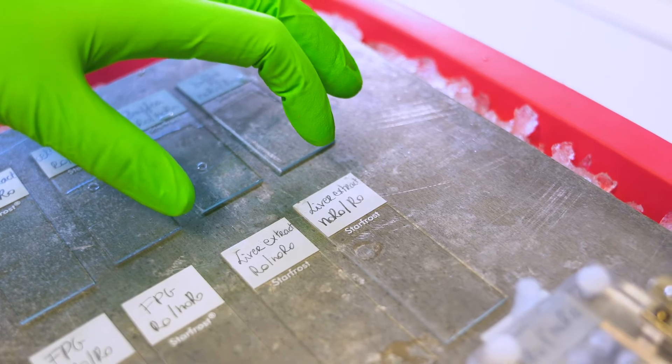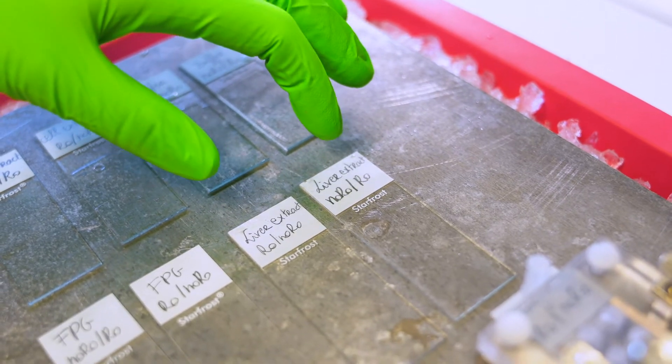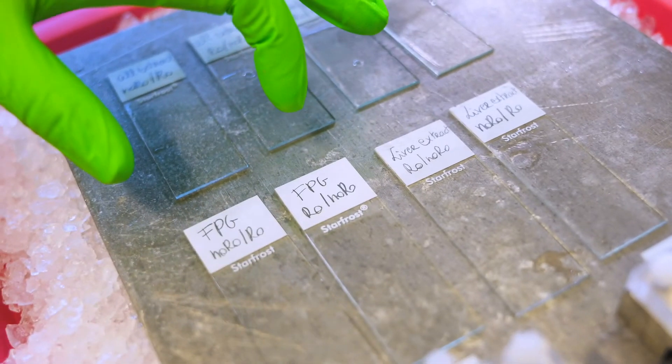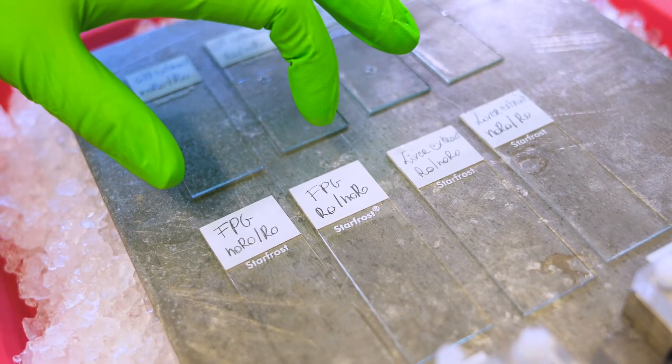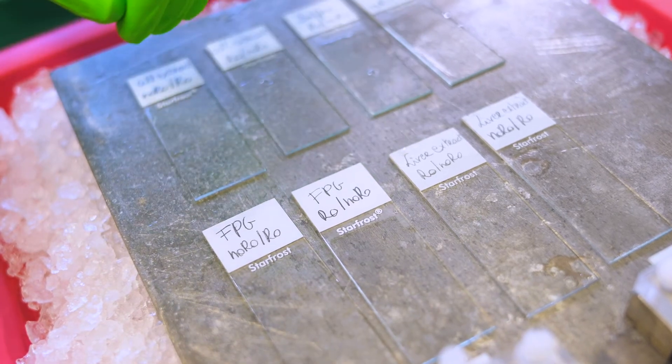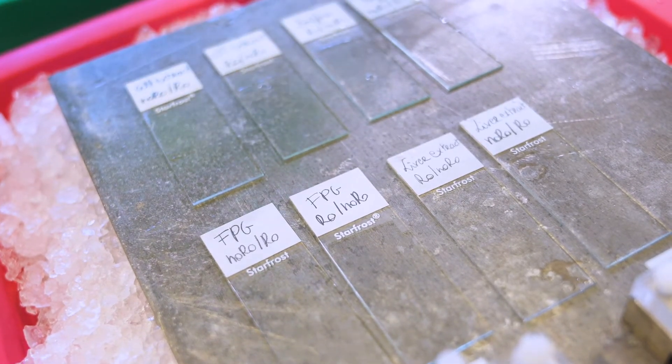Or you could work with tissue extracts. In our case we're using a liver extract. Important is that you always include an assay control. Since we're working for BER with compound-exposed cells, we use FPG as an assay control to see if the assay worked.